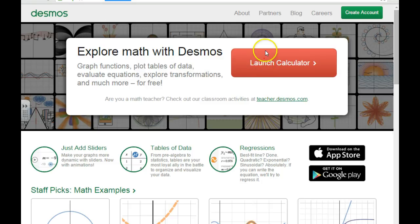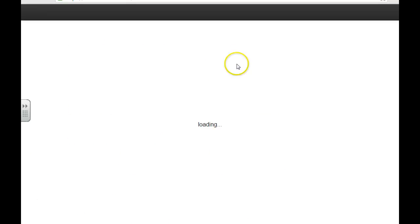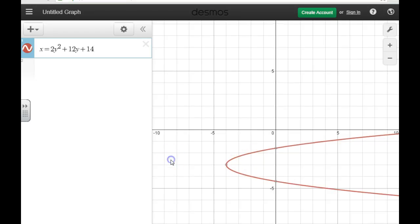Launch calculator. What's the equation, Victor? X equals 2Y squared plus 12Y plus 14. Okay. There's what it's going to look like. Is that a parabola? It's just a parabola. We're not supposed to get X on the other side, right?